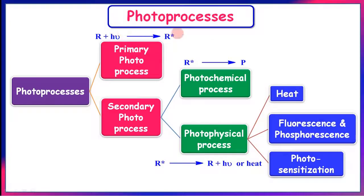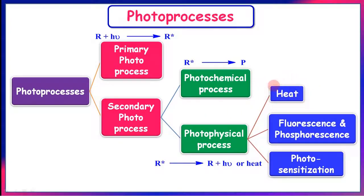Any photoprocess involves two steps: primary photoprocess and secondary photoprocess. In the primary photoprocess, the reactant molecule absorbs light and gets excited. The excited molecule may undergo dissociation, rearrangement, isomerization, or react with another reactant molecule to yield product — this is the photochemical process. Sometimes the excited molecule may emit back excess energy as light or heat — this is the photophysical process. Photophysical processes include: emission of excess energy as heat, re-emission as fluorescence or phosphorescence, or transfer of energy to nearby molecules, known as photosensitization.